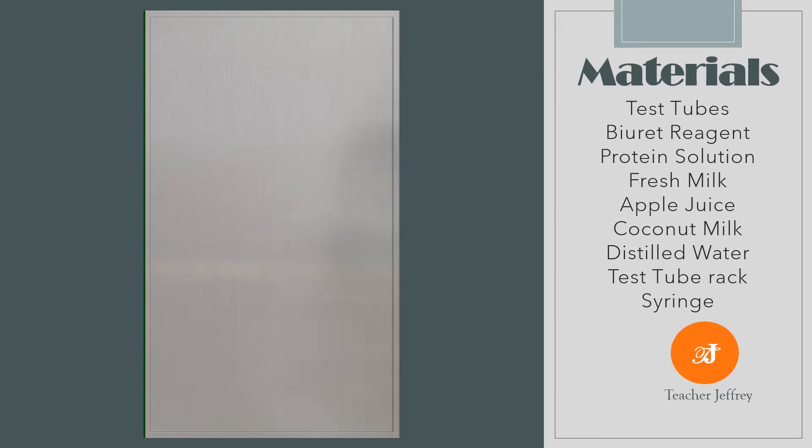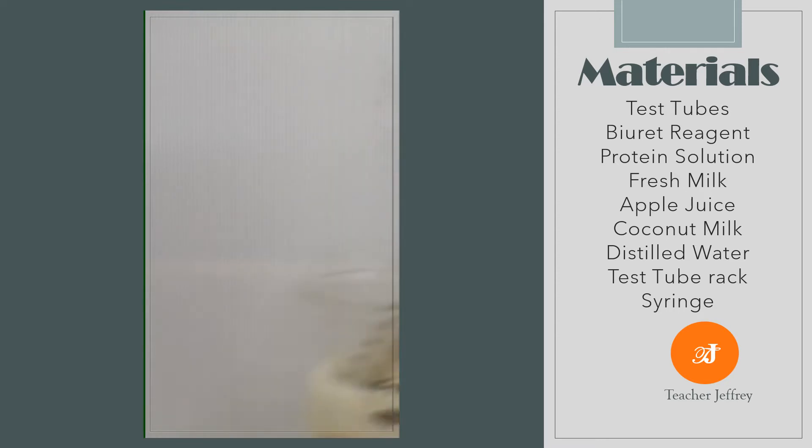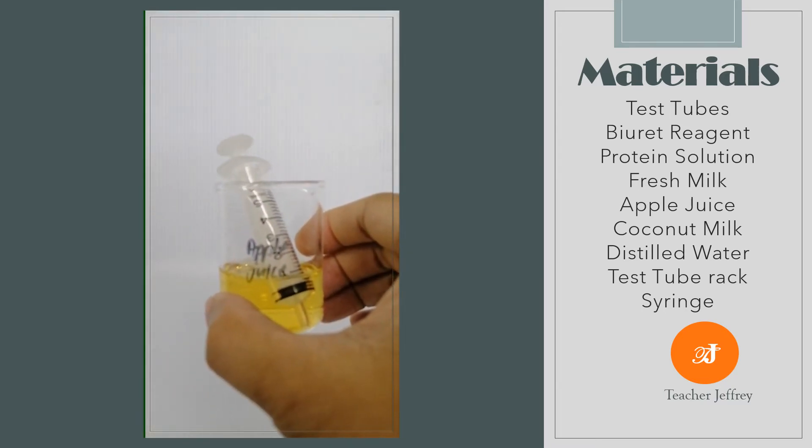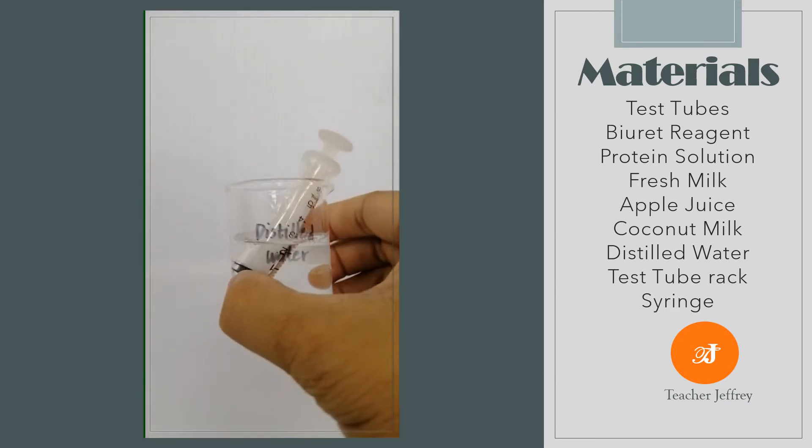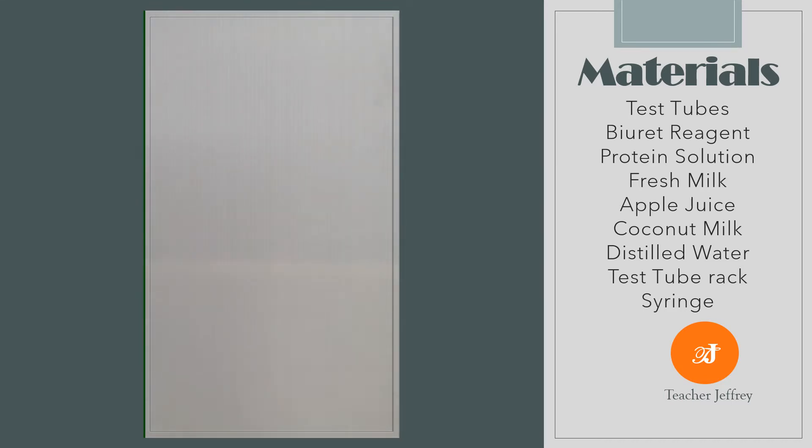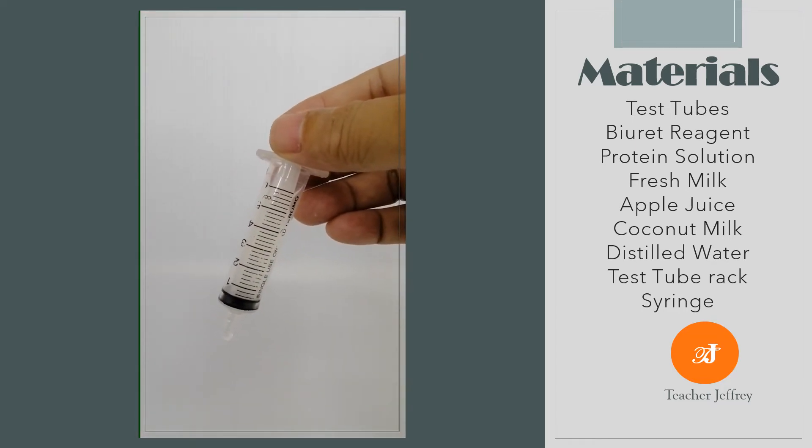These are the materials needed: test tubes, Biuret reagent, protein solution, fresh milk, apple juice, coconut milk, distilled water, test tube rack, and we also need a syringe.